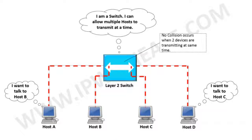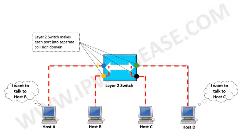Let's see the reason why the data from A and D did not collide in spite of transmitting at the same time. The reason is that a switch makes each port into a separate collision domain, hence no collision occurs. Unlike a switch, in the case of a hub, all ports remain in one collision domain.